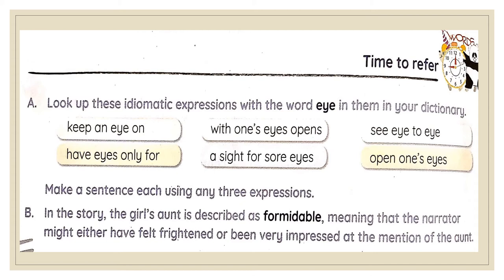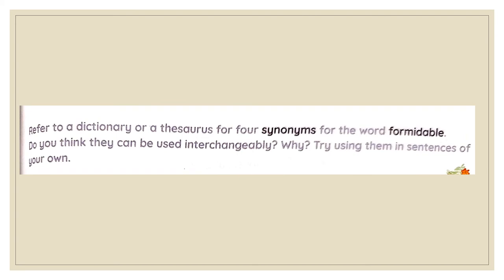In the story, the girl's aunt is described as 'formidable,' meaning the narrator might either have felt frightened or been very impressed at the mention of the aunt. Refer to a dictionary or a thesaurus for four synonyms for the word 'formidable.' Do you think they can be used interchangeably? Why? Try using them in sentences of your own.